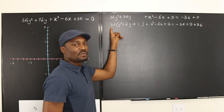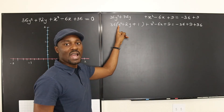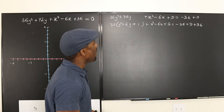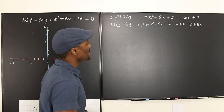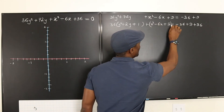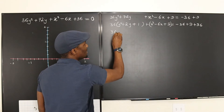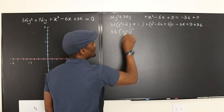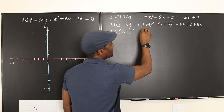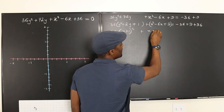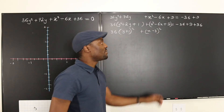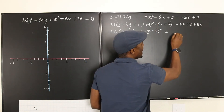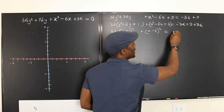Remember, we factored because to complete the squares, the coefficient of y squared has to be 1, just as the coefficient of x squared is 1. So now let's write these as perfect squares. This will be 36 multiplied by (y plus 1) squared, plus (x minus 3) squared equals negative 36 plus 9. This will be gone and you've got 9.